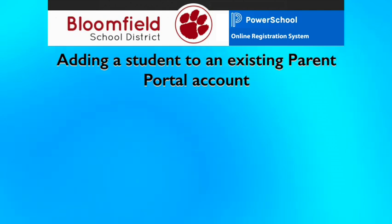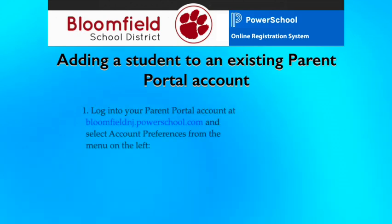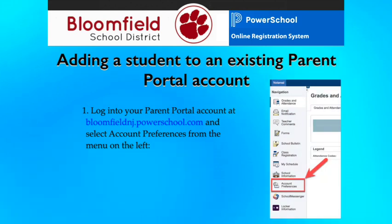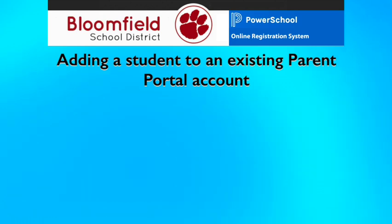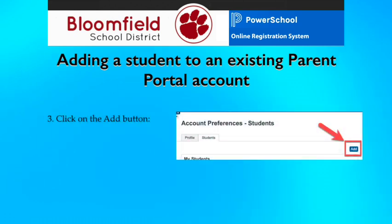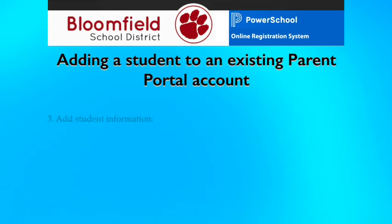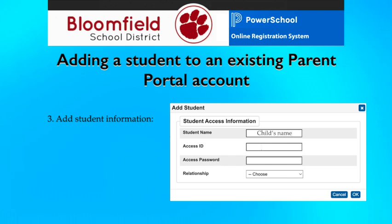Add a student to an existing Parent Portal account by following these steps. Using a browser, log in at bloomfieldnj.powerschool.com. Click on Account Preferences in the menu on the left side of the screen. If you don't see this menu, click on the small black triangle at the top of the screen to reveal it. Click on the Students tab at the top of the page, then click the Add button in the top right corner. Enter the child's name, access ID, access password, and your relationship to the child, then click OK. The child has now been added, and you will see the name in a tab at the top of the screen. You can switch between children by clicking on their name tabs at the top of the screen.